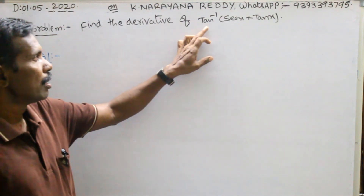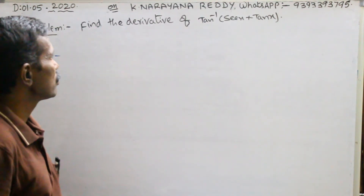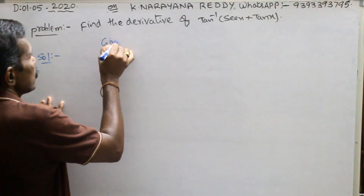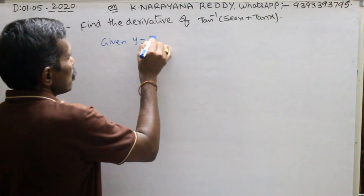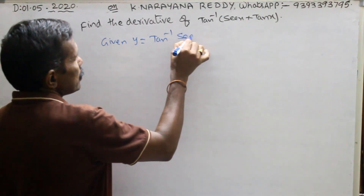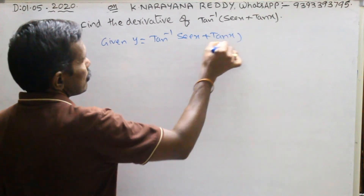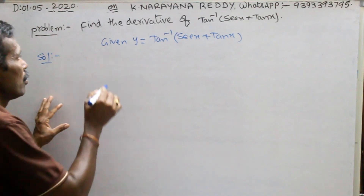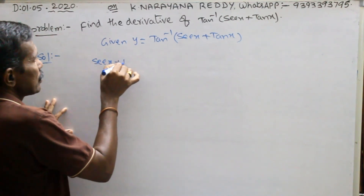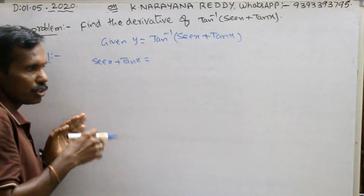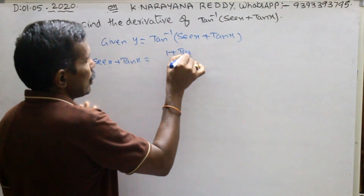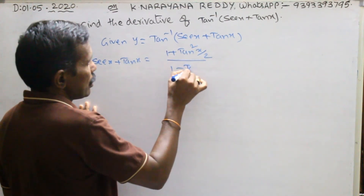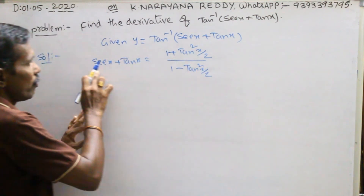Find the derivative of tan inverse(sec x plus tan x). Given: y equals tan inverse of (sec x plus tan x). Now, sec x plus tan x — what is the formula? It equals (1 plus tan²(x/2)) divided by (1 minus tan²(x/2)). This is the formula for sec x.